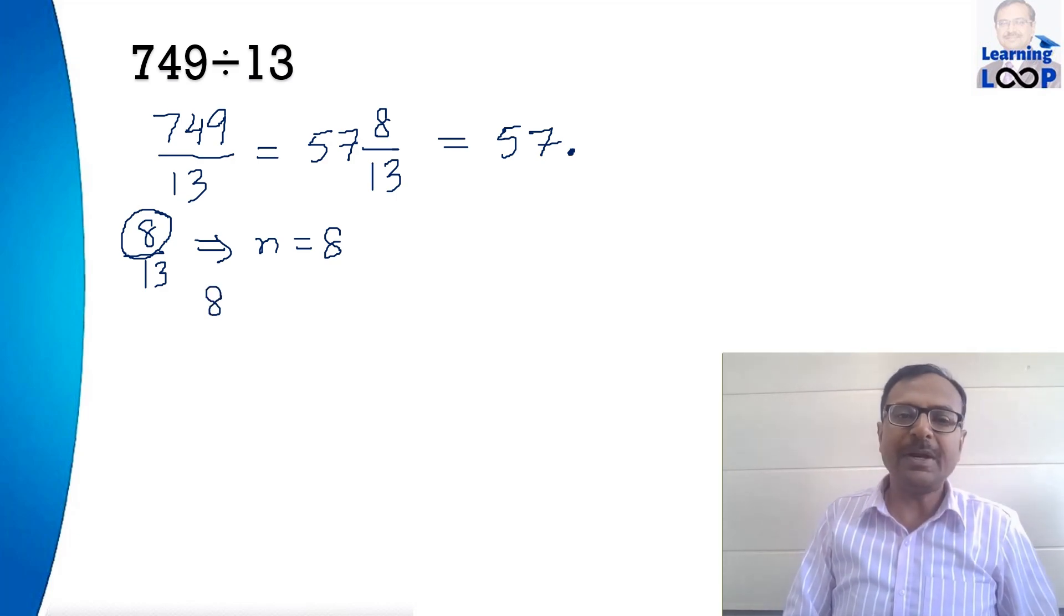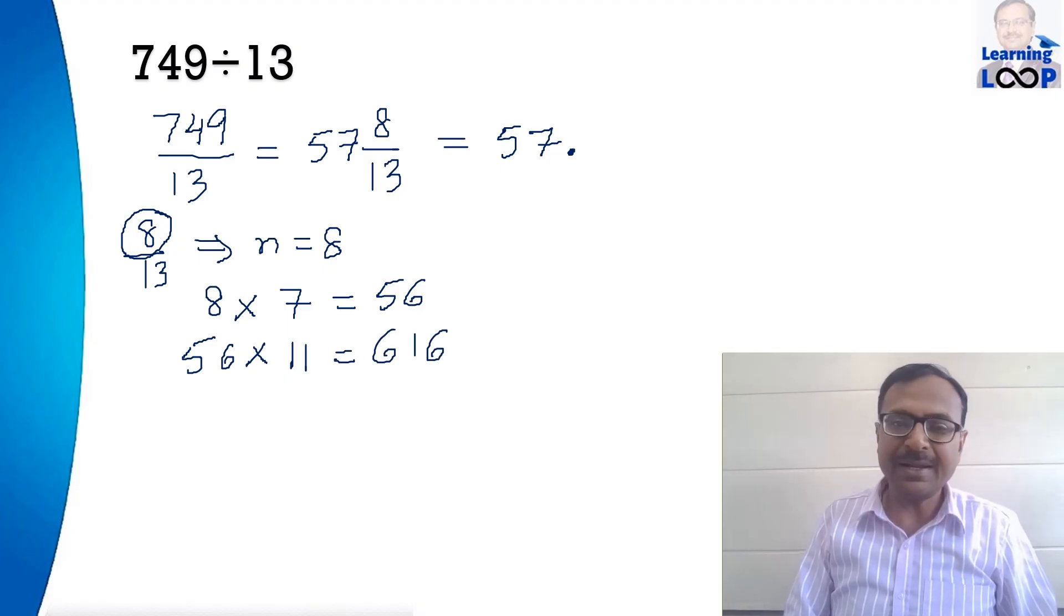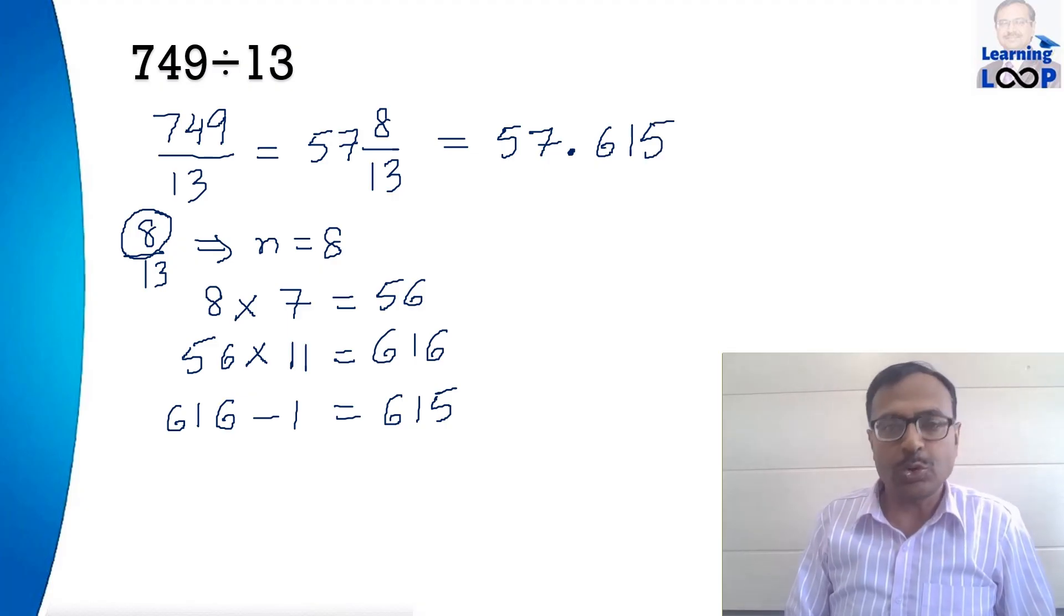The first thing is you have to multiply 8 by a constant 7 and you will get 56 and then multiply 56 by another constant 11 and you will get 616. Then the number which you have got just take the difference of that number and 1 that means you have to reduce that number by 1. You will get 615.